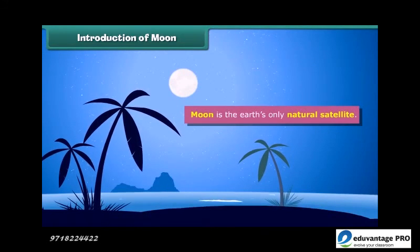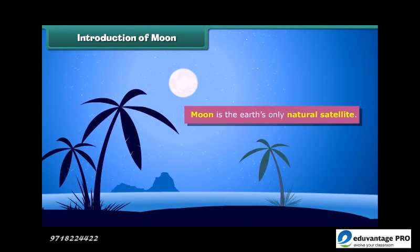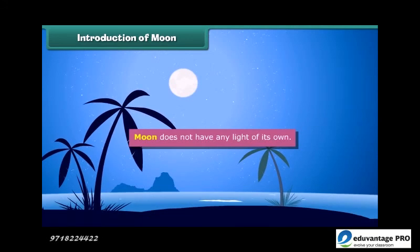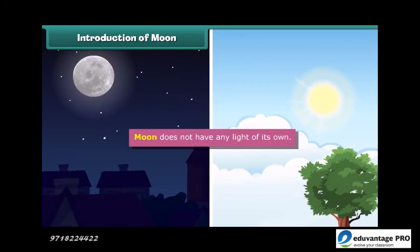The moon is the Earth's only natural satellite. It is the second brightest object in the sky after the Sun, but the moon does not have any light of its own. The light you see is actually from the Sun reflecting off the surface of the moon. So if the Sun wasn't there, we would not be able to see the moon.